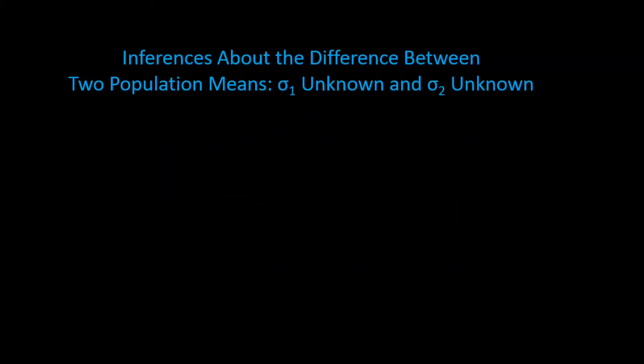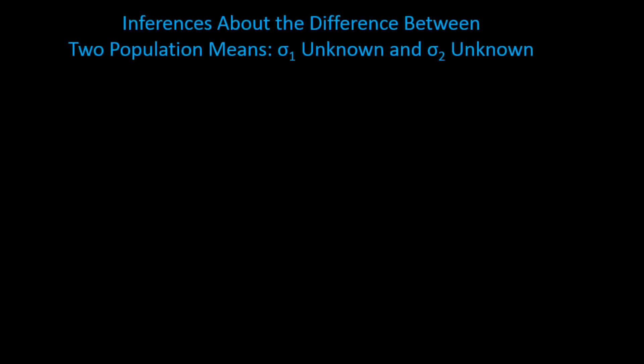In this tutorial, we will be drawing inferences about the difference between two population means, mu1 and mu2, for sigma1 unknown and sigma2 unknown. We will use both a confidence interval approach and hypothesis testing. Let's begin first with interval estimation.